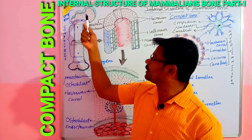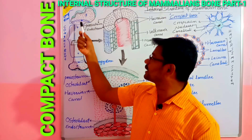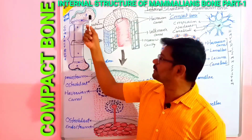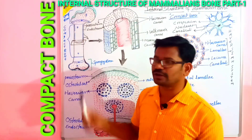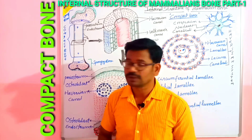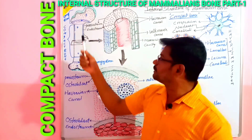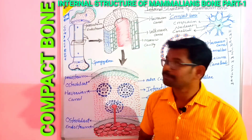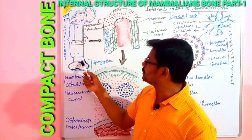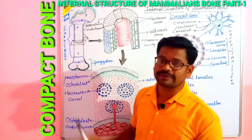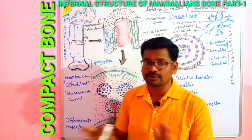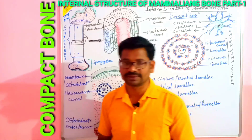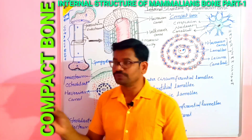The three structural types are: first, epiphysis; second, metaphysis; and third, diaphysis. Epiphysis is present at the ends of the long bones. Metaphysis is present between the diaphysis and epiphysis. Diaphysis is present between the two metaphyses. These have been clearly explained in previous lectures.